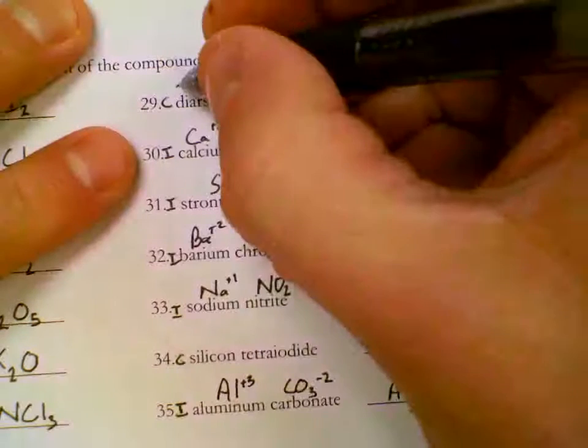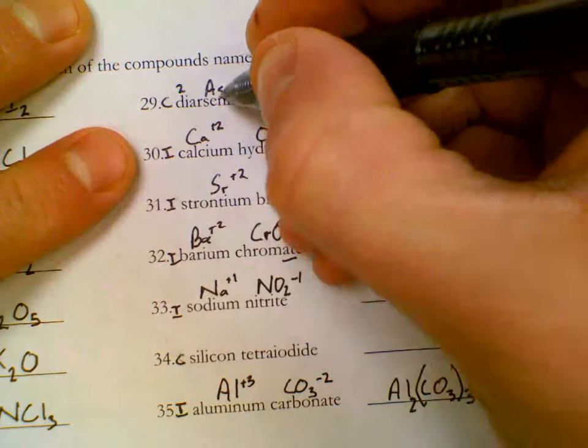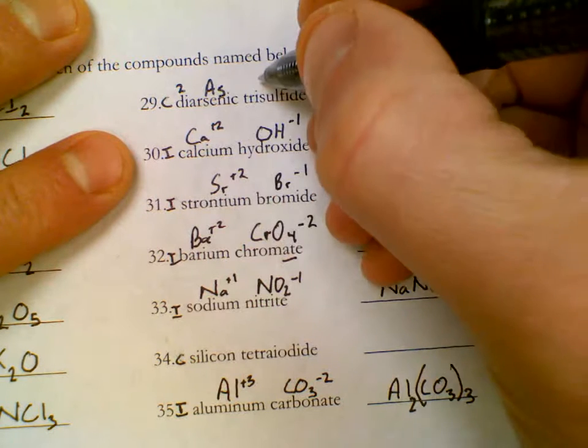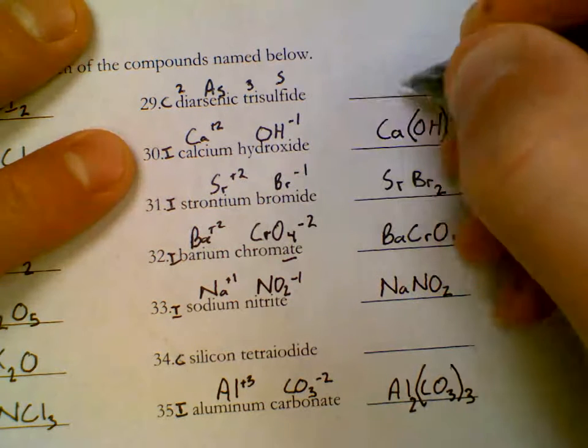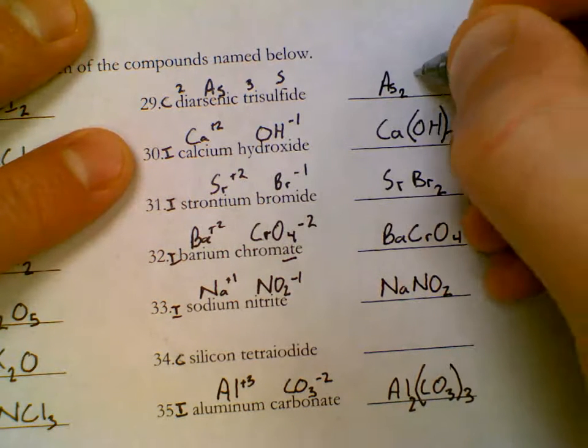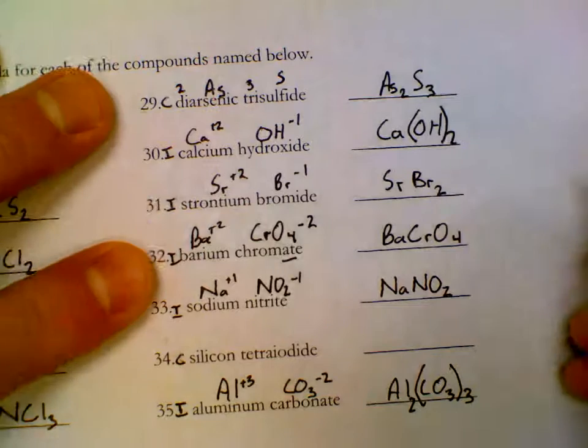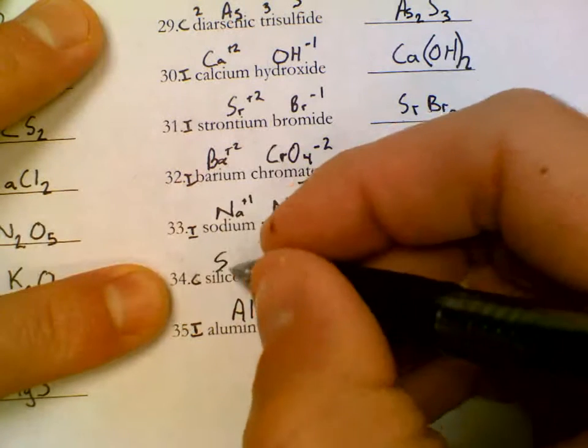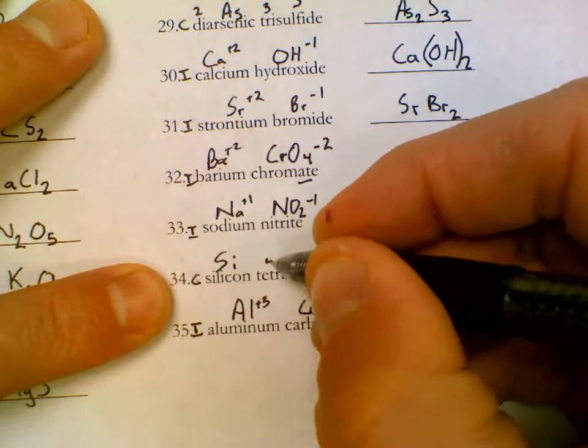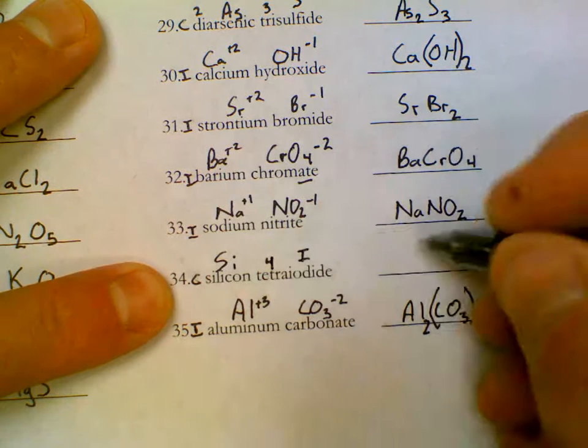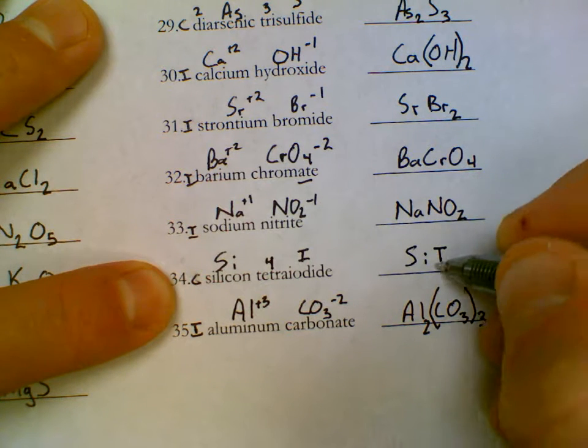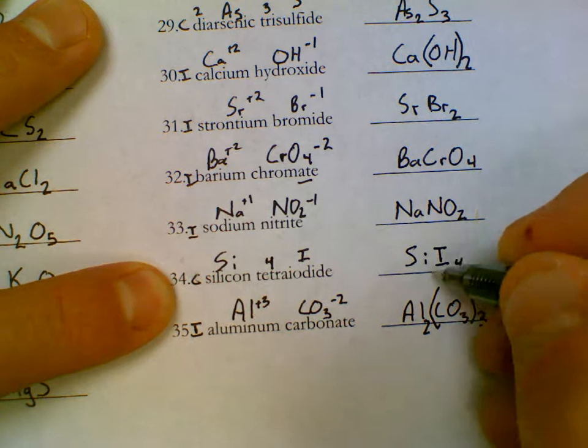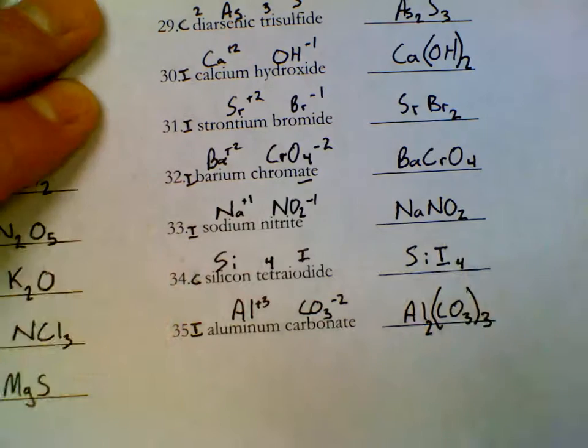Di arsenic, di is 2. Arsenic is AS, not to be confused with argon. You can look it up on your periodic. Tri is 3, S is S. So AS subscript 2 S subscript 3. And lastly, silicon is Si. 4 is tetra, I is iodide. Si big I 4. So it's important, capital S lowercase i, capital I subscript 4. And that's it.